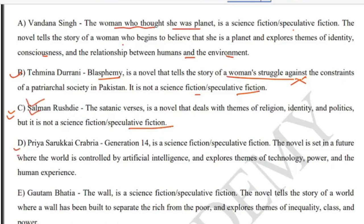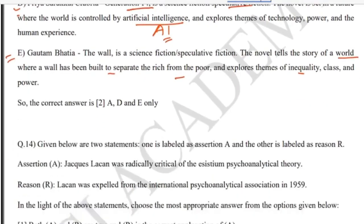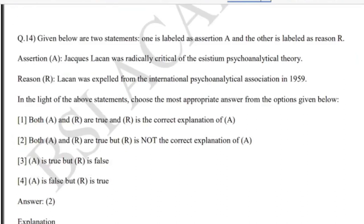Priya Sarukkai Chabria's 'Generation 14' is science fiction and speculative fiction — set in a future world controlled by artificial intelligence, exploring themes of technology, power, and human experience. Gautam Bhatia's 'The Wall' is also science fiction: it tells the story of a world where a wall separates the rich from the poor, exploring inequality, class, and power. So the correct answer is second — A, D, and E.